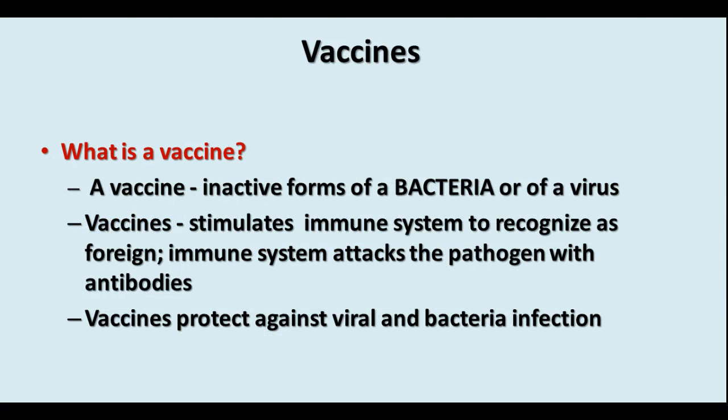A vaccine is an inactive form of a bacteria or a virus that can stimulate your immune system to produce antibodies against the pathogen, and that will help protect you against future infection from that disease. We take vaccines all the time — flu, polio, and various other illnesses — and they're very useful in helping prevent infection.